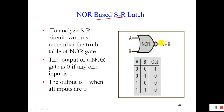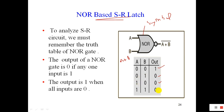A NOR gate has two inputs and one output. This is the symbol of the NOR gate. This is the truth table of the NOR gate — that is A plus B, inverted. 0 plus 0 equals 0, inverted gives 1. 0 plus 1 equals 1, inverted gives 0. 1 plus 0 gives 0. 1 plus 1, inverted by the NOR gate, also gives 0. And thus we get the truth table of the NOR gate.